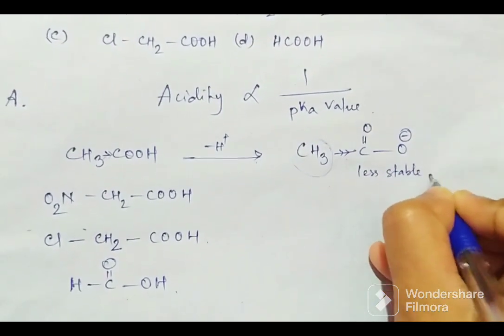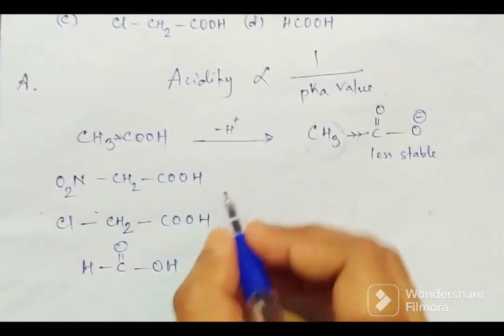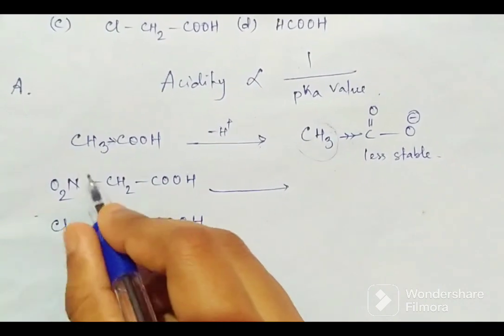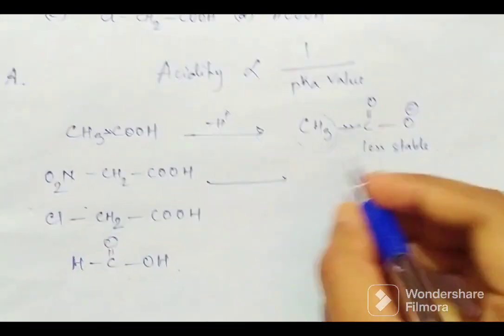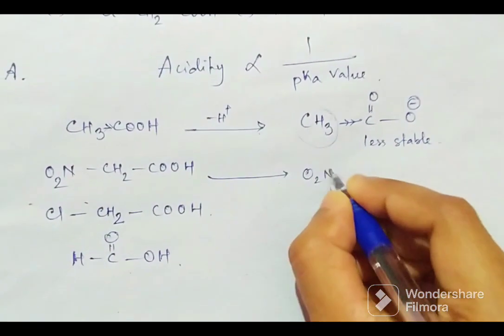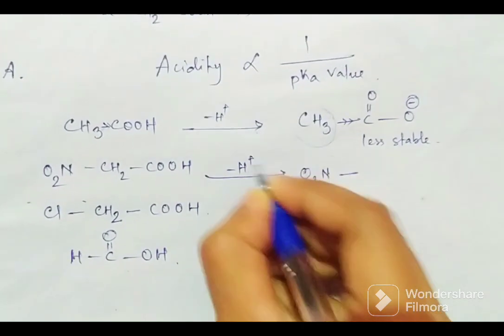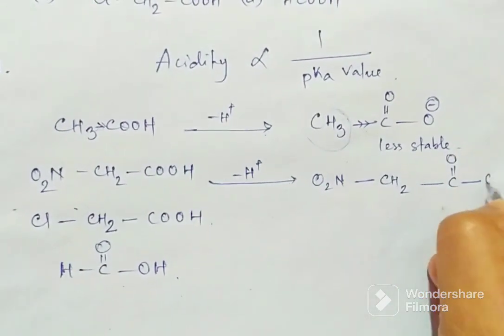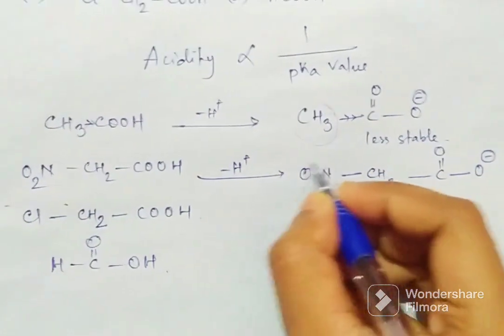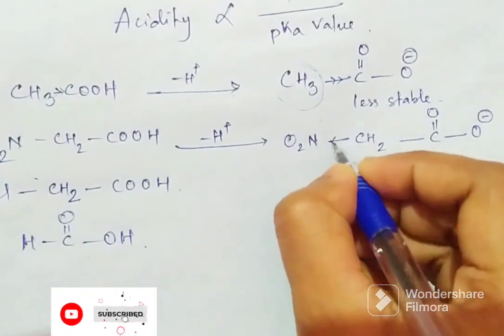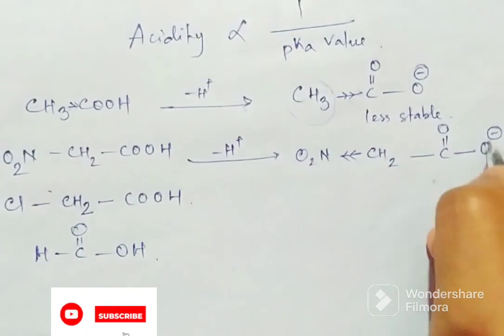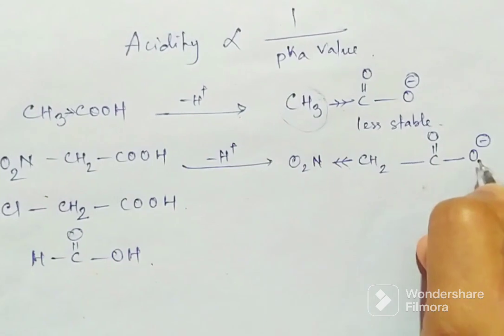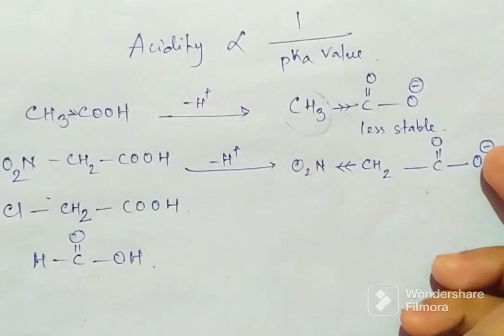This carbanion will be less stable. Now come to the next one. Here it is NO2 group, which is an electron withdrawing group. So now here, if we remove one H+, what will happen? This NO2 group will accept electrons or withdraw electrons, so less negative charge will be present on the oxygen atom because this electron will go that side. So in this case, this carbanion will be more stable.